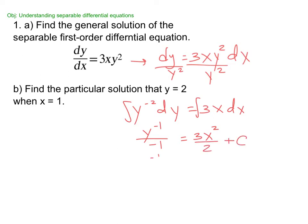Alright, so the antiderivative of y to the negative 2 is y to the negative 1 divided by negative 1, 3x² over 2 plus C. So that's negative 1 over y. So in the textbook, they leave it like this. This is technically the general. They don't solve for y. I usually will solve for y, but the general solution in the textbook, they leave it like that. I think that's weird. I usually will solve for y.